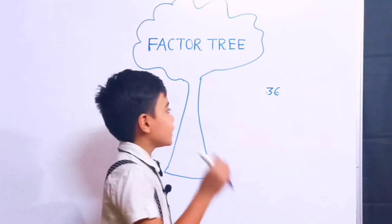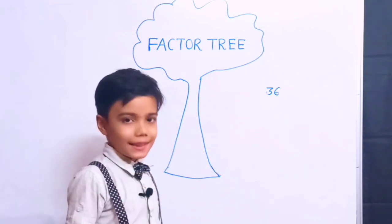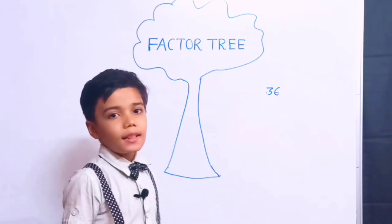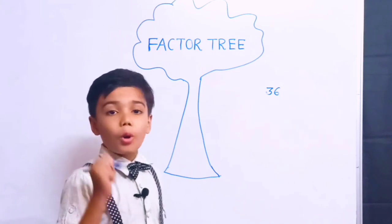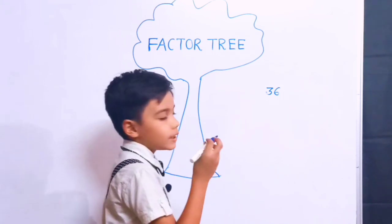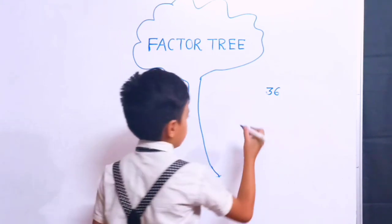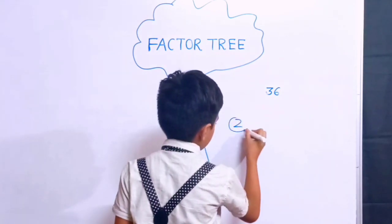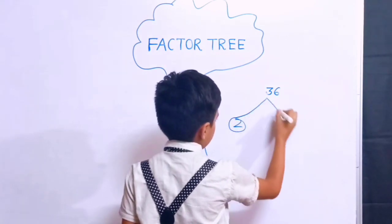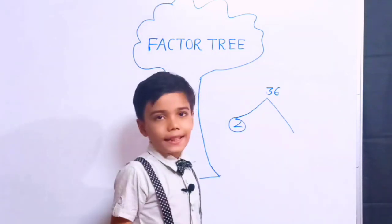Let's take another example, number 36. 36 is a composite number. 2 is the smallest prime number, so we will start dividing from 2.